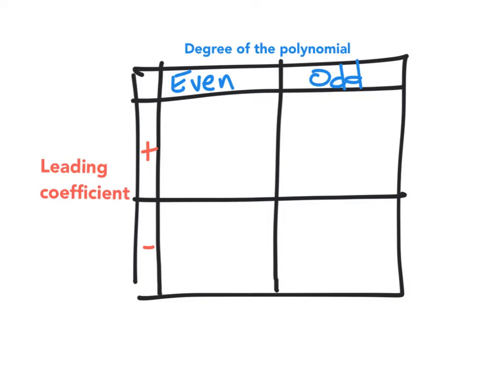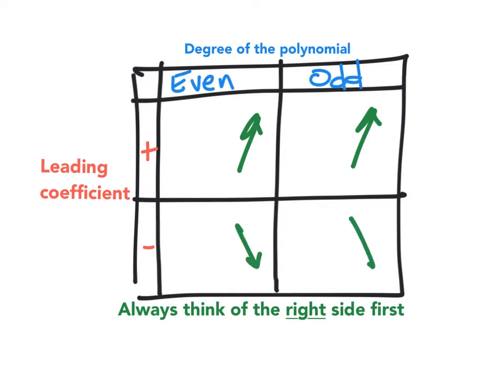For polynomials, you don't even need to see the graph to know the end behavior. And to know the end behavior, all we have to look at is the leading coefficient and the degree of the polynomial. And we're always going to think of the right side first. If the leading coefficient is positive, it always likes to end going up. Or if it's negative, it likes to end going down to negative infinity. Now even functions like to go in the same direction. So this will either be both up or both down. And odd functions go in opposite directions. So down up or up down. Now depending on the polynomial, you might have a lot of stuff happening in between, but these are the end tails.